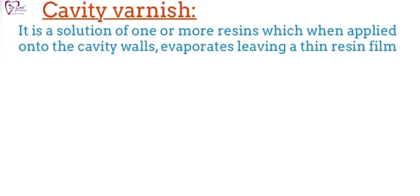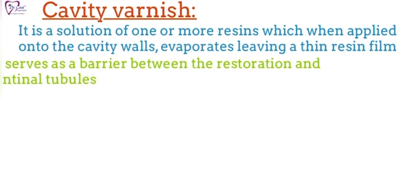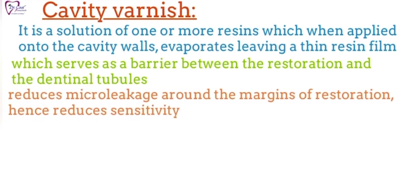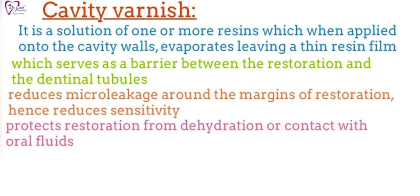Now coming to cavity varnish — it is a solution of one or more resins which, when applied onto the cavity walls, evaporates leaving a thin resin film. It serves as a barrier between the restoration and the dentinal tubules, reduces microleakage around the margins of the restoration, and hence reduces sensitivity.